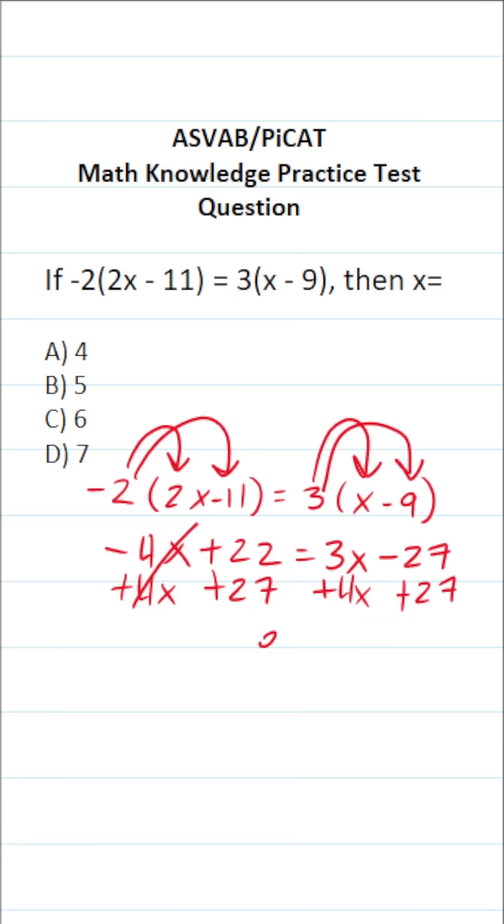3x plus 4x is 7x. Negative 27 plus 27 is 0, so those go away.